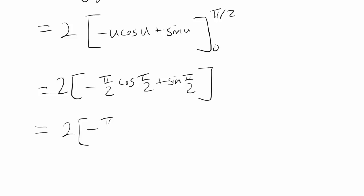No, no, no. Cosine of pi over 2. Cosine of pi over 2 is 0. So you have negative pi over 2 times 0 plus sine of pi over 2, which is 1. So our final answer is 2.